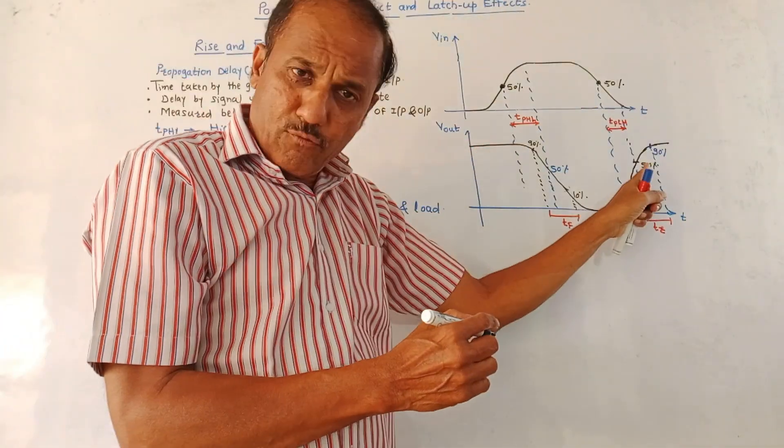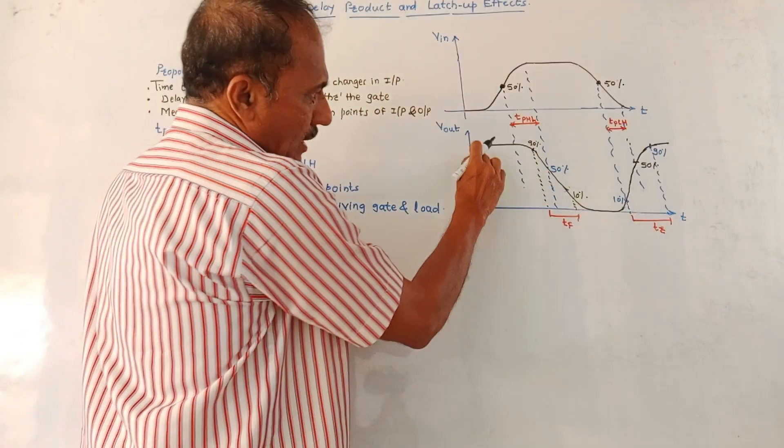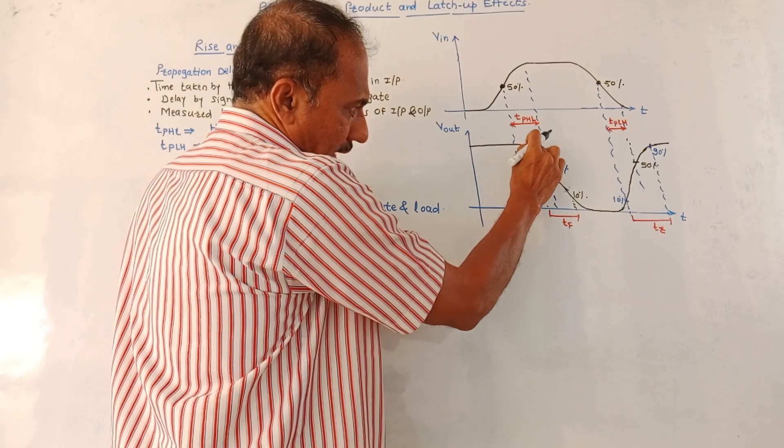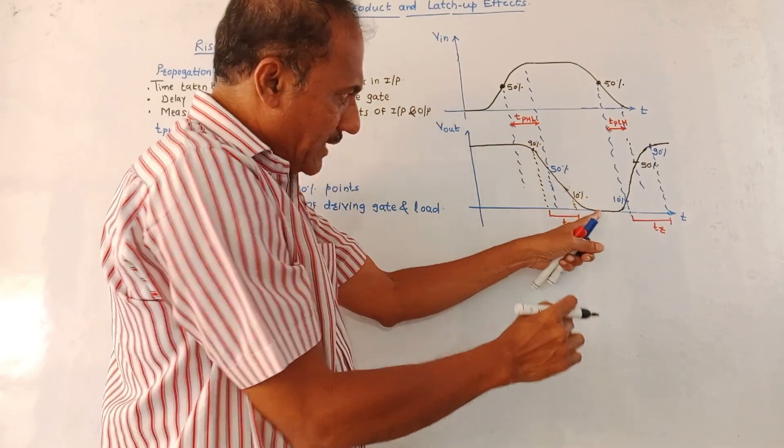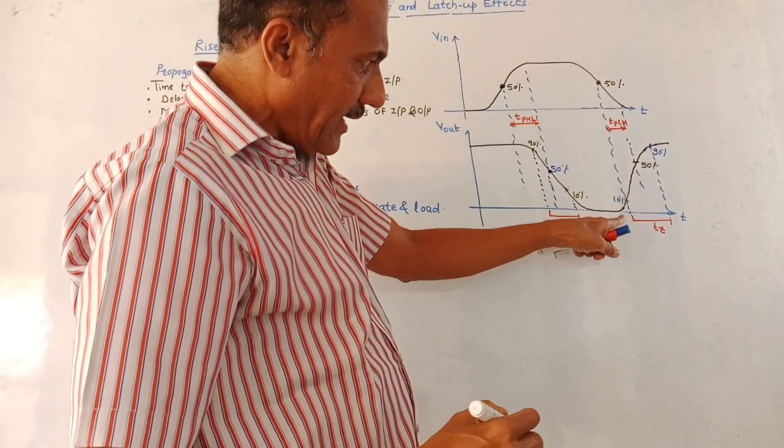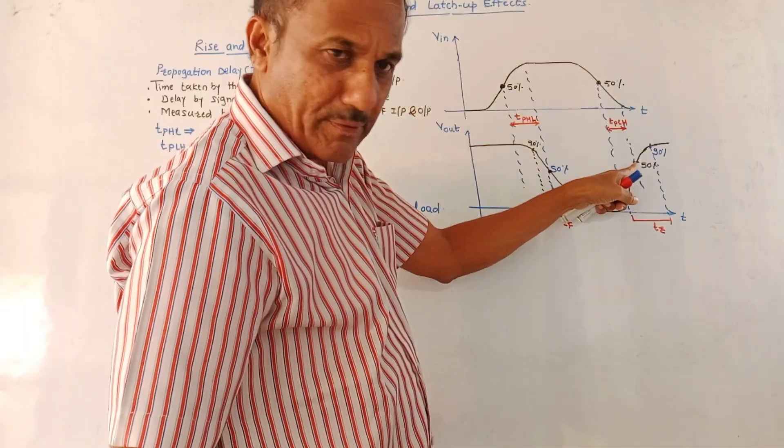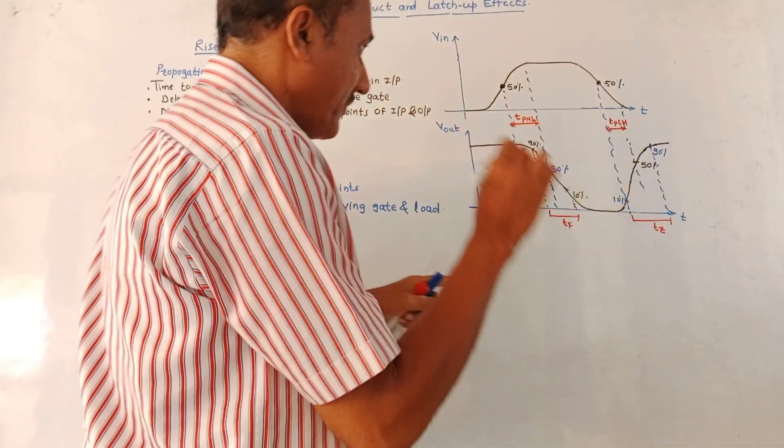Same concept. This is the output waveform graph of V out versus time. In this case also, initially output is constant. After that, it falls down, it becomes 0, this is 50% point. Similarly, from this point again it starts rising whenever input is falling and you are getting 50% point over here.